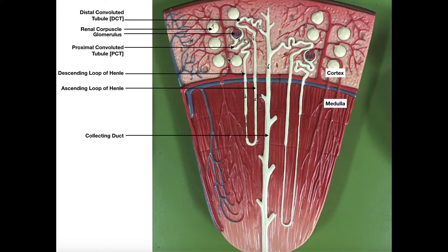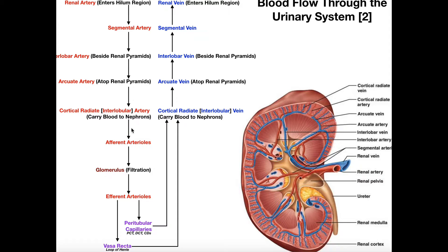Each interlobular artery serves several nephrons, and the part of the nephron it serves directly is what we call the glomerulus — that is the capillary network inside the corpuscle. So the afferent arteriole from each interlobular artery supplies the glomerulus, which is a capillary bed. That capillary bed called the glomerulus is where filtration occurs in the kidney.